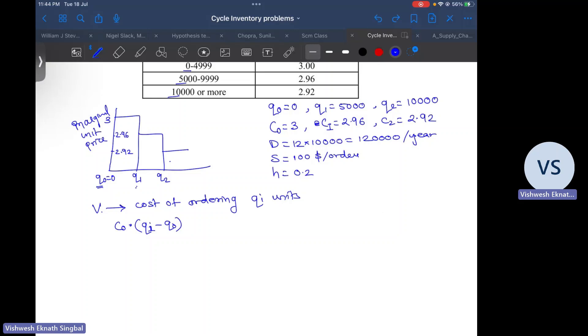So we know v0 is 0. That's how it is defined. v1 is c0 into q1 minus q0, that is 3 into 5000 minus 0, that is $15,000.